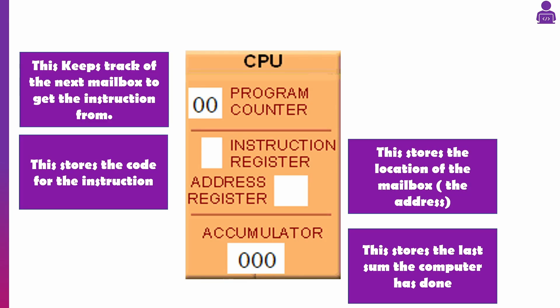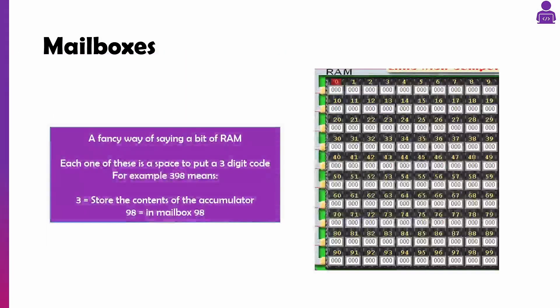We've also got the address register, which is sort of like the memory address register. For example, 3 could be the opcode for store, so that would go in the instruction register. If I'm loading slot 1, the address register would hold 01, because that's where the data is. The accumulator stores the result of the last calculation. The mailboxes are just RAM — that's where all your code and data gets stored. You've got a maximum of 100 slots in this LMC simulation.